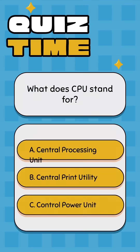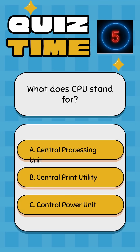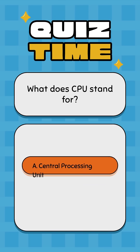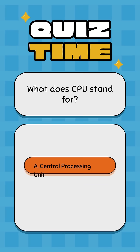What does CPU stand for? A: Central Processing Unit, B: Central Print Utility, C: Control Power Unit. Correct answer: A, Central Processing Unit.